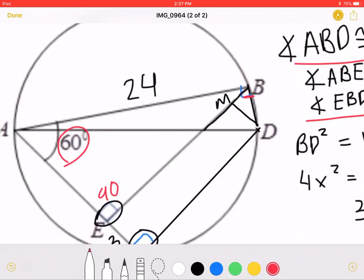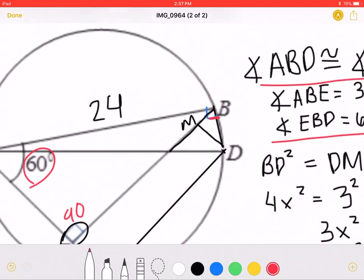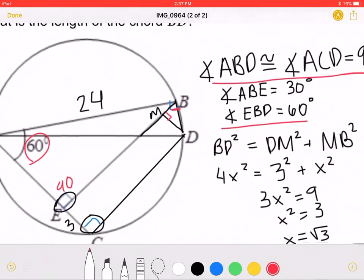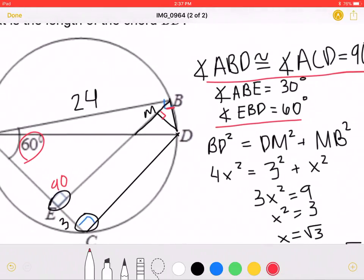Because this angle is equal to 60 and this is a right angle, we have a 30-60-90 triangle. Now, we can set up an equation using Pythagorean theorem.